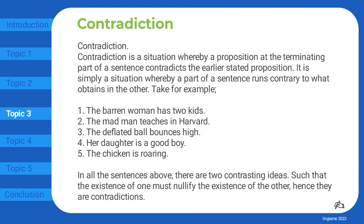Contradiction is a situation whereby a proposition at the terminating part of a sentence contradicts the earlier stated proposition. It is simply a situation whereby a part of a sentence runs contrary to what obtains in the other. For example: 'The barren woman has two kids.' 'The madman teaches in Harvard.' 'The deflated ball bounces high.' 'Her daughter is a good boy.' 'The chicken is roaring.' In all these sentences, there are two contrasting ideas such that the existence of one must nullify the existence of the other, hence they are contradictions.